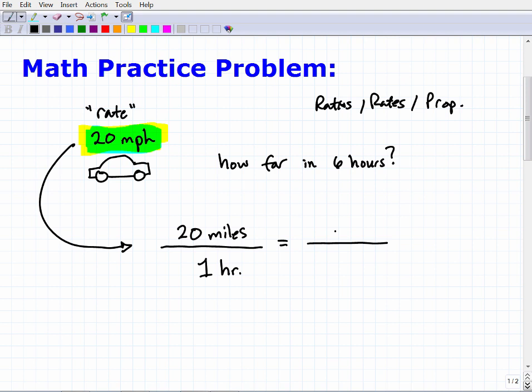It's the unknown value, so in algebra, an unknown value we just represent that with a variable. So let's use a simple variable X. Now, I don't know how far this is going to go in six hours, but when you set up a proportion, what we want to do is have the same units here in this fraction over to the right.